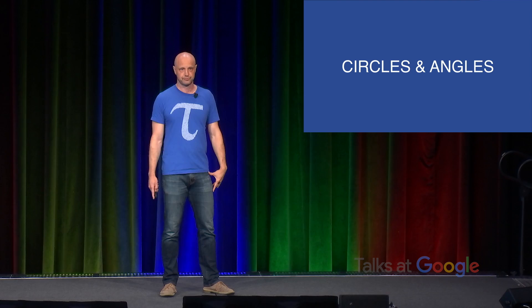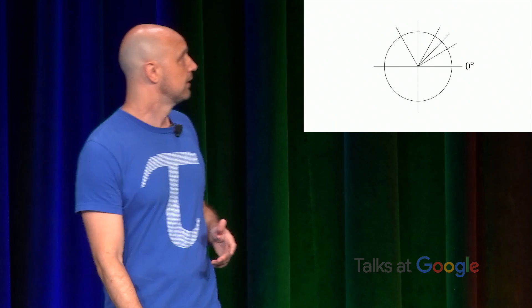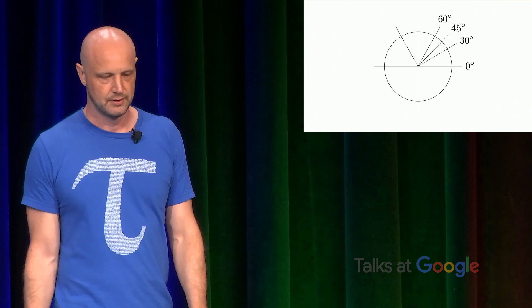You may recall from high school trigonometry, these special angles written in degrees. So 0 degrees, 30 degrees, 45, 60 degrees, 90 degrees for right angle, and then 120, 180, 270, and then back 360.